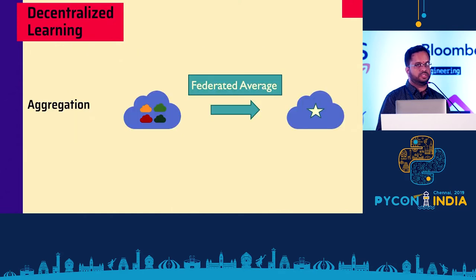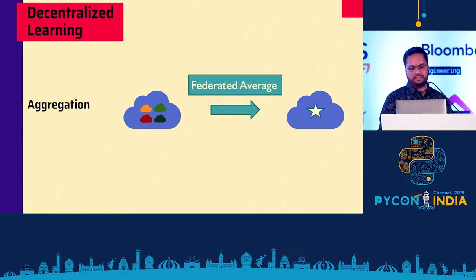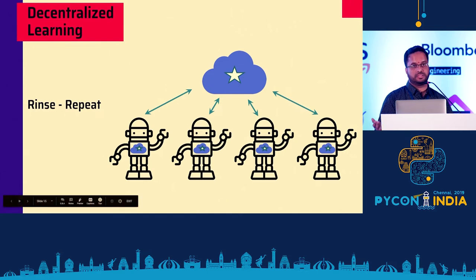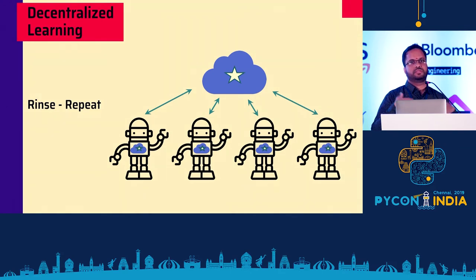After training happens, these model weights are sent to the centralized server — could be a cloud or on-prem server — where secure aggregation happens. Once aggregation happens, the centralized server sends the updated model back to the devices. A simple way to combine models from various devices is to take the average of the weights — a simple averaging, a simple ensemble model — and that gets sent back to the devices.